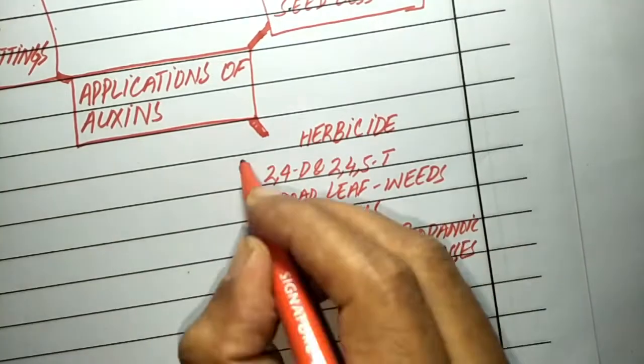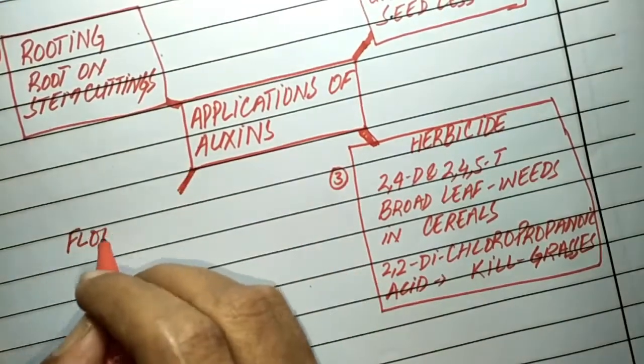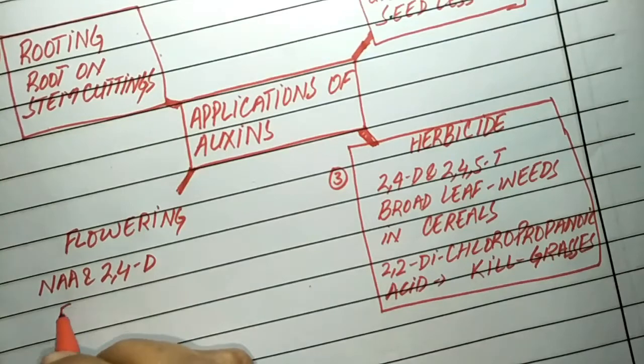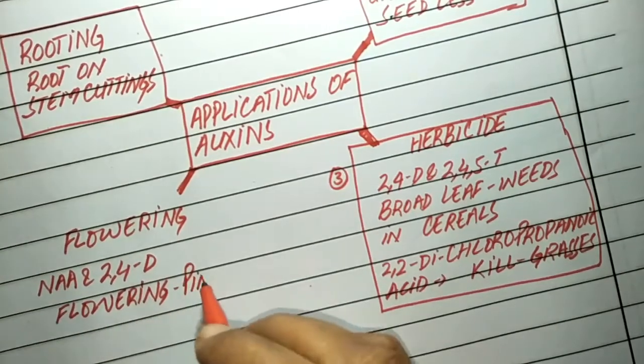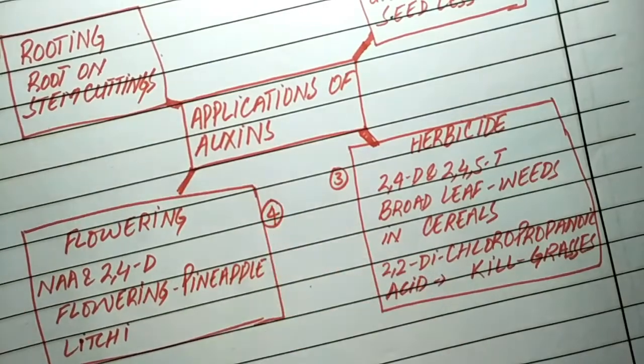They are also used in flowering induction. For example, naphthalene acetic acid and 2,4-D are often employed for inducing flowering in lychee and pineapples.